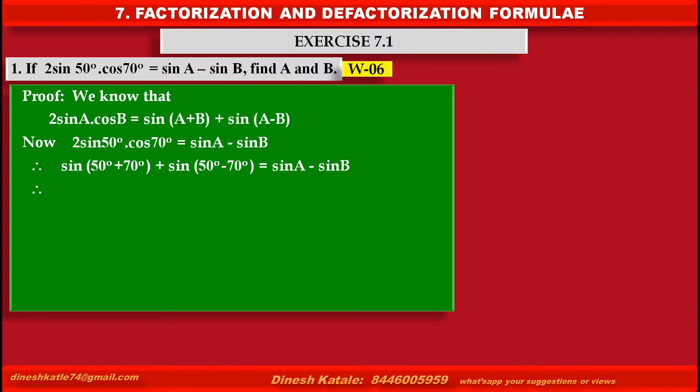Therefore, solving the above step, we get sin 120° plus sin(-20°) equals sin A minus sin B.